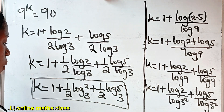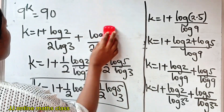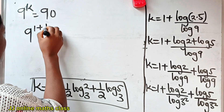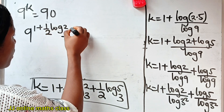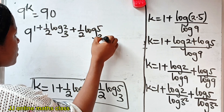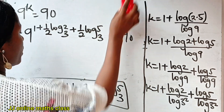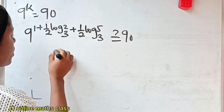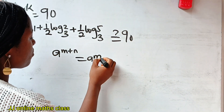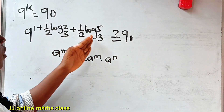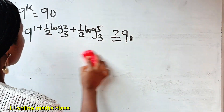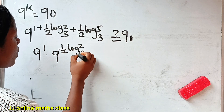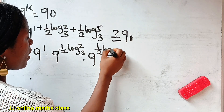So this is the value of K. Now let us prove that this answer is actually correct. So the left side is 9 raised to the power of 1 plus one-half log₃2 plus one-half log₃5. Let's see if this equals 90. Recall the law of exponents: A raised to the power of M plus N equals A to the power of M multiplied by A to the power of N. So we express this as 9 to the power of 1, multiplied by 9 to the power of one-half log₃2, multiplied by 9 to the power of one-half log₃5.